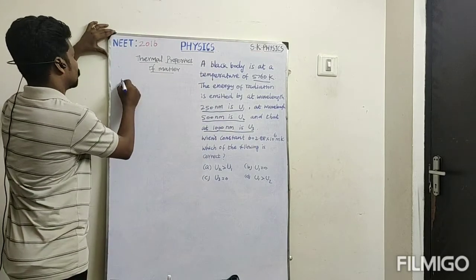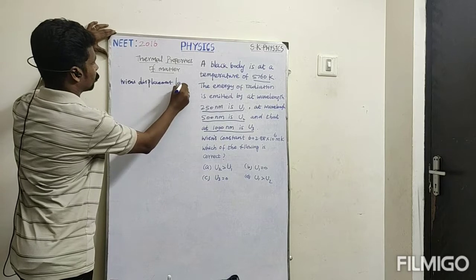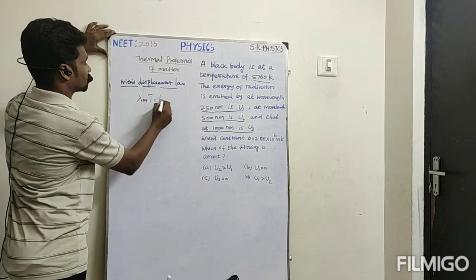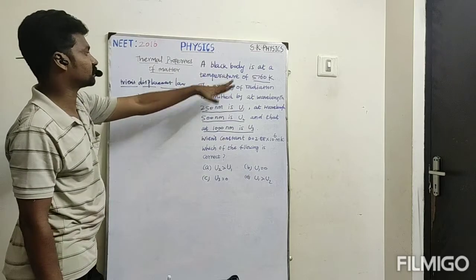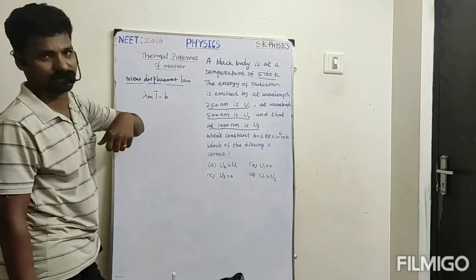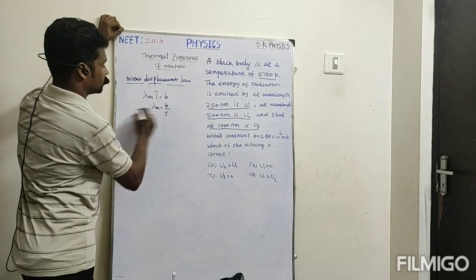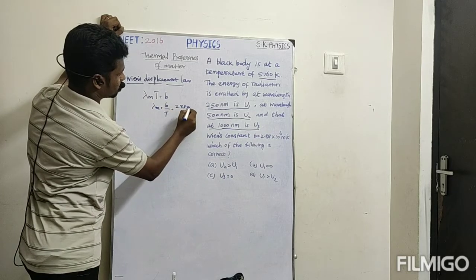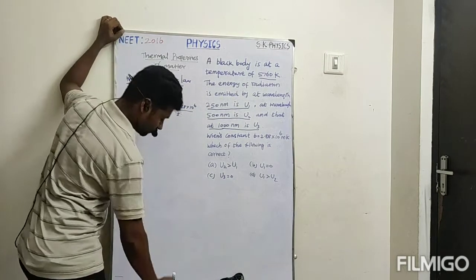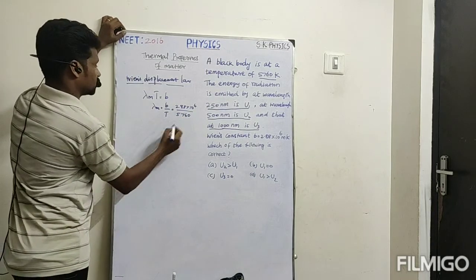We use Wien's Displacement Law. From that law, the formula is λm × T = constant, so λm = b / T. Here b is given as 2.88 × 10⁶ and T is 5760 Kelvin. So we can write λm = 2.88 × 10⁶ divided by 5760.